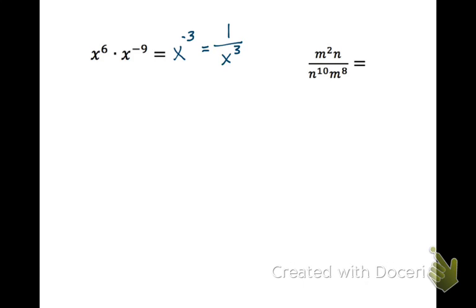For number 15, we have x to the 6 times x to the negative 9. Using the multiplication rule, we add exponents: 6 plus negative 9 gives x to the negative 3. We can't leave a negative exponent, so we move it to the bottom of the fraction to get 1 over x to the third. For the next problem, start with the m's: 8 minus 2 is 6, on the bottom because 8 is bigger. For the n's, one of them has no written exponent so we use 1 — giving 10 minus 1 = 9 — also on the bottom because 10 is bigger. If you have nothing left on top, just put a 1 there.